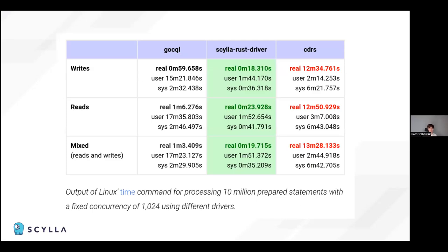After the hackathon, these were the initial benchmarks we did. We compared the ScyllaDB Rust driver with the Go CQL driver and the existing CDRS Rust driver for Cassandra. The table shows the time it takes to process 10 million requests at fixed concurrency. The Rust driver was much better compared to those two drivers, and this was really encouraging us to develop the driver further and make it production quality.